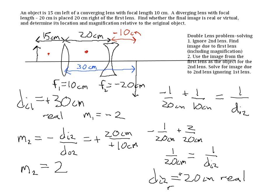To find the final magnification, we multiply the magnification from each lens: M_total = M1 × M2 = −2 × 2 = −4. The negative answer means the final image is inverted, or upside down, compared to the original object, and it is four times bigger.